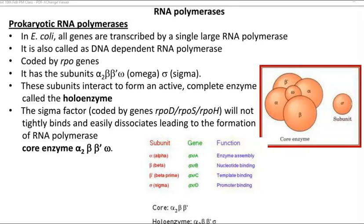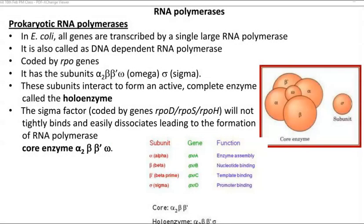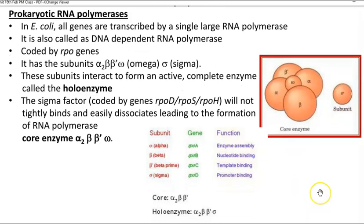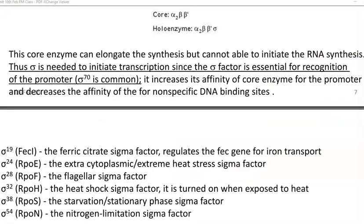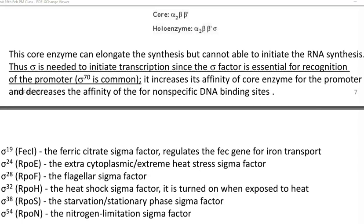The functions of various subunits are noted in the diagram — which gene codes for the alpha subunit, what its function is, and likewise for beta, beta dash, and sigma. Sigma plays an important role in promoter binding; binding to the promoter is carried out only with the help of the sigma factor. The core enzyme can elongate RNA synthesis, however it cannot initiate RNA synthesis. For initiation of transcription, the sigma subunit plays a major role.